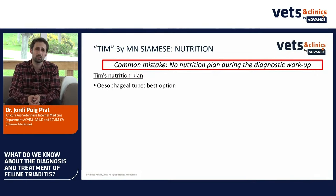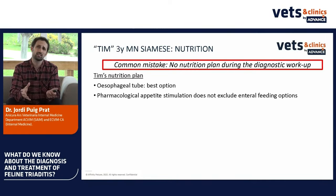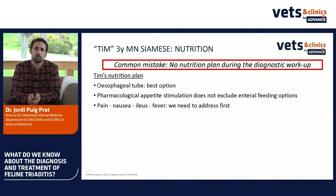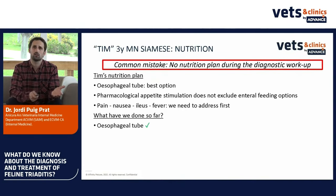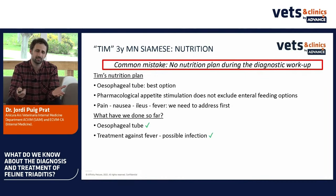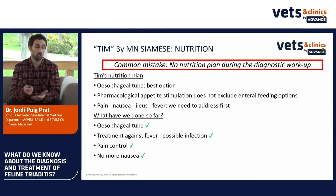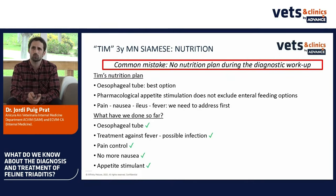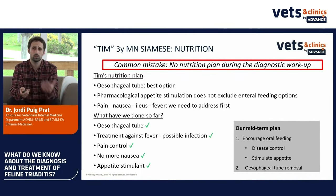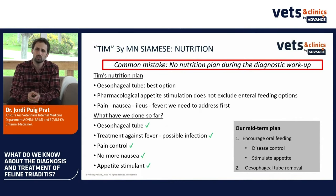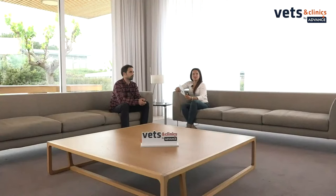As we said, the common mistake is no nutrition plan during the diagnostic workup. Nutrition is really important in these cats. We placed an esophageal tube — in my experience it's the best option. We have to think that pharmacological appetite stimulation does not exclude enteral feeding options. We have to treat the pain, nausea, ileus, fever — whatever is going on. We need to address these first. Our mid-term plan was to encourage oral feeding with a hypoallergenic diet in this case, and to remove the esophageal tube once the cat was eating on its own.